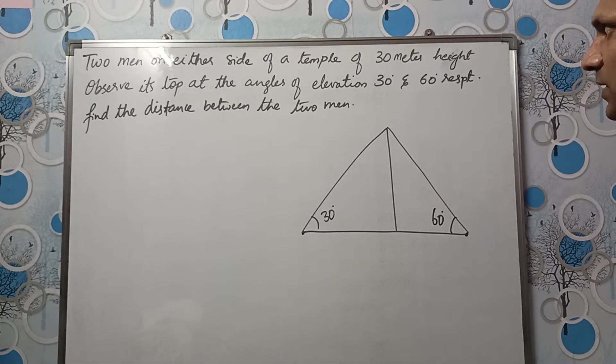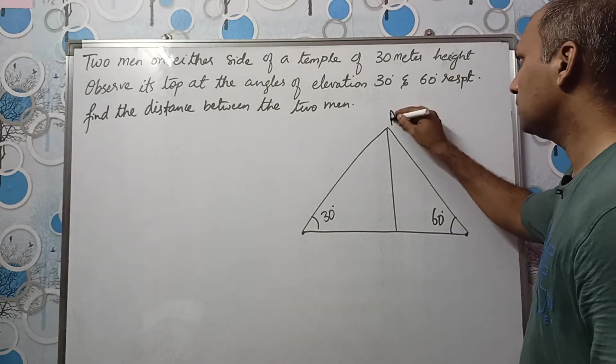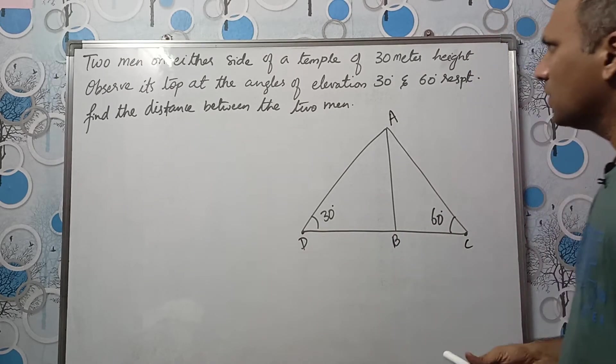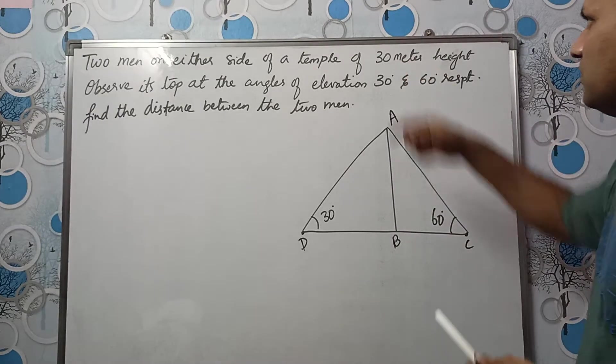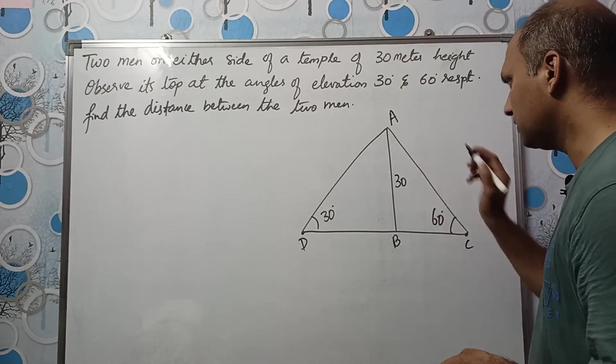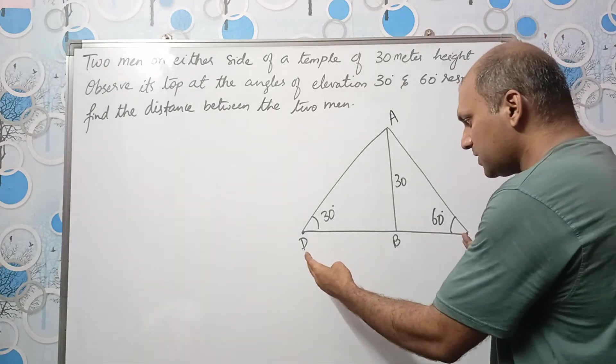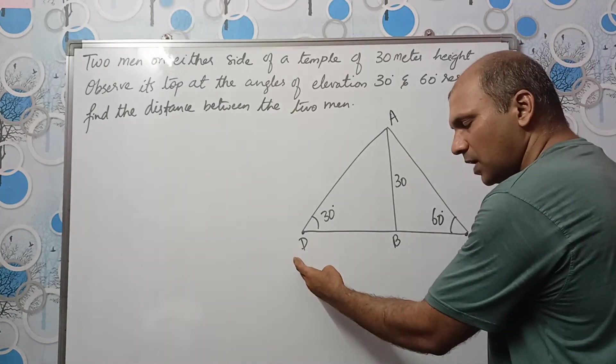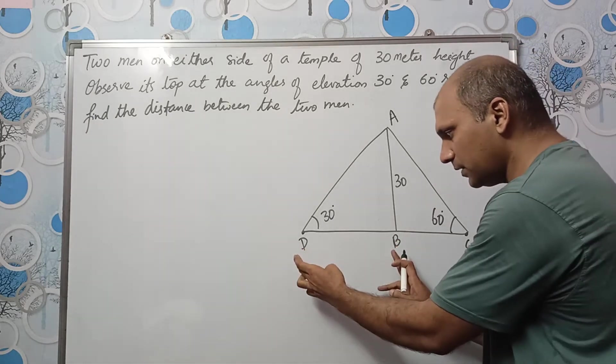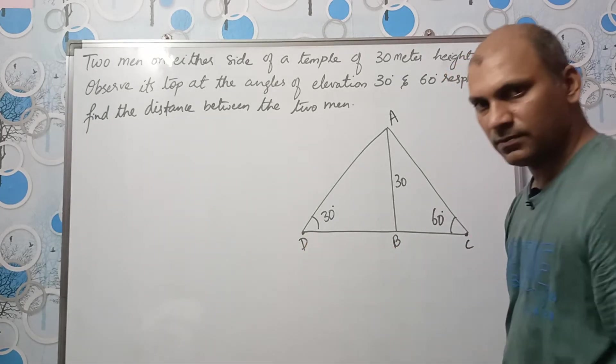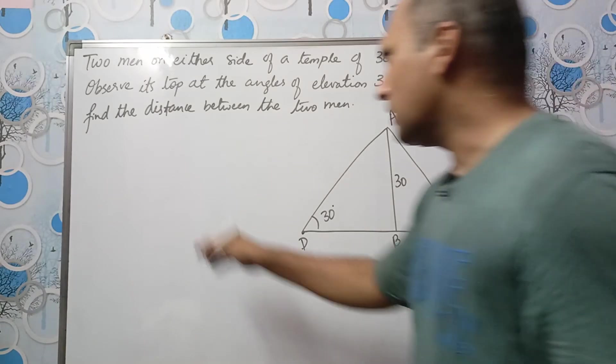Find the distance between the two men. So let us name this A, B, C and let this be D. Height of the temple is 30, we need height. Now we need to find the distance between these two men, that means we need to find DC. So how can we find DC? We need to find DB first and BC and then add it.